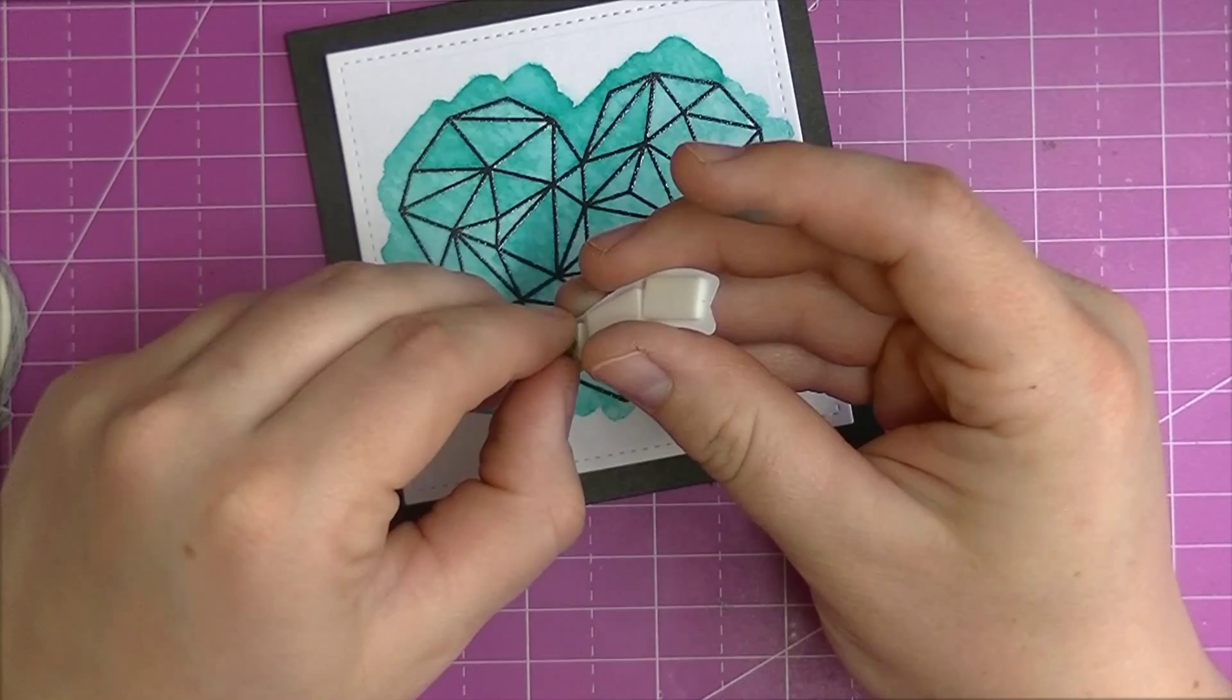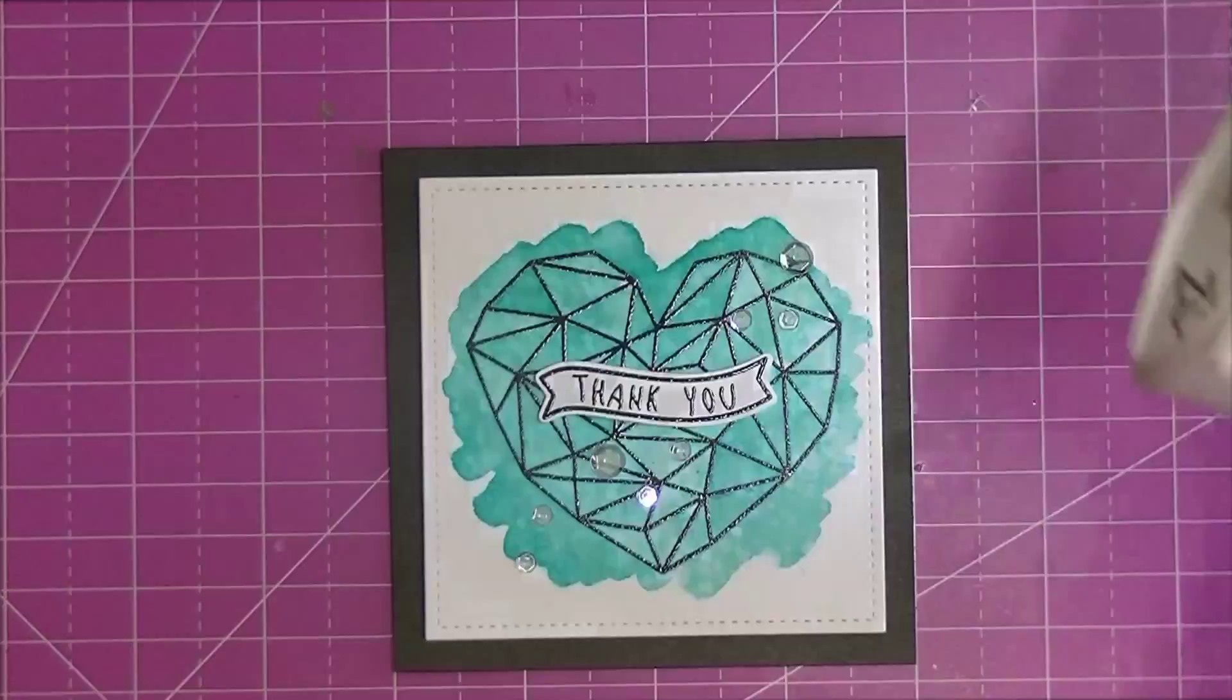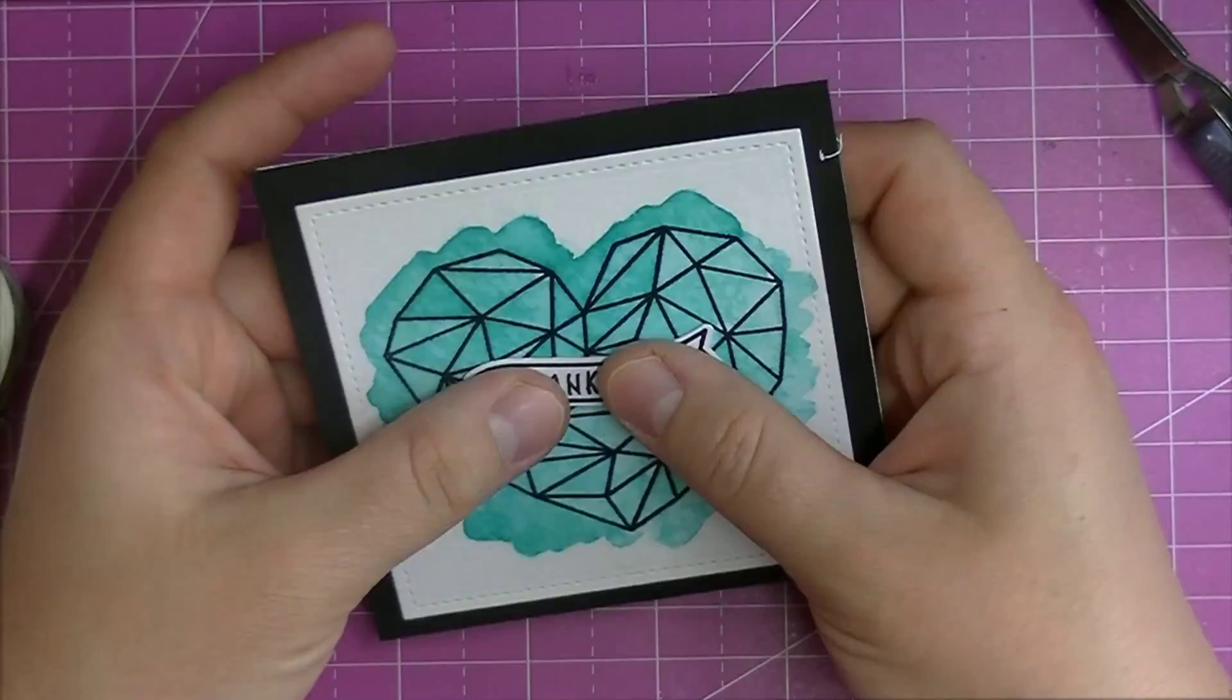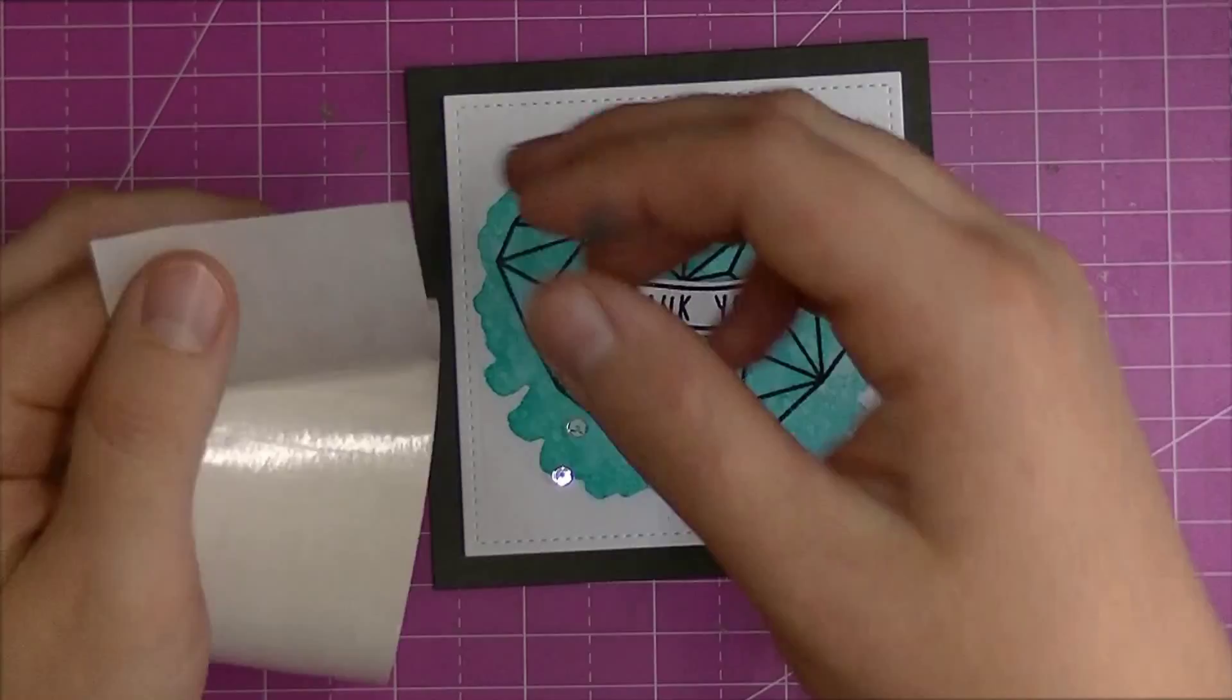I sprinkled the clear embossing powder on top, heat set that, and used the metal die to die cut it. I put some foam tape on the back and adhered that to the middle of the heart.